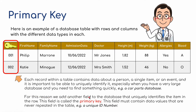For this reason, we add another field to the database that uniquely identifies the item in the row. The field is called the primary key, and the numbers for each different record would be in this column. The field must contain data values that are never repeated in the table. It's usually auto-generated — we start with one, and every time we have another record it auto-generates another number — a unique ID number.